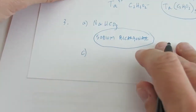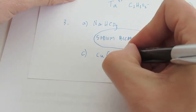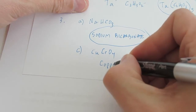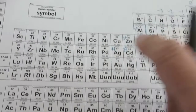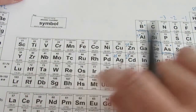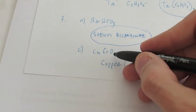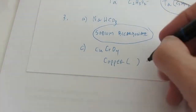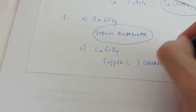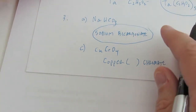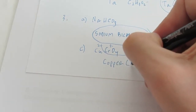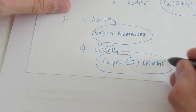Let's skip to letter C. The formula is CuCrO4. Cu is copper, and copper requires Roman numerals — it's a transition metal. CrO4 is a polyatomic ion called the chromate ion; we don't change the ending, so we just say chromate. Copper something chromate — we have to figure out the Roman numeral. Chromate has a charge of two negative, and there is one of them, so copper here has to be two positive. That means this is copper two chromate.